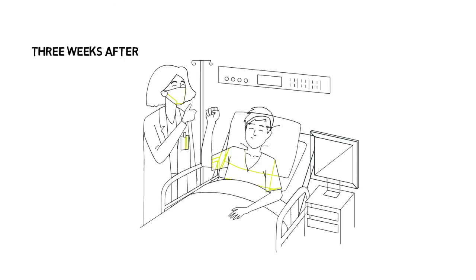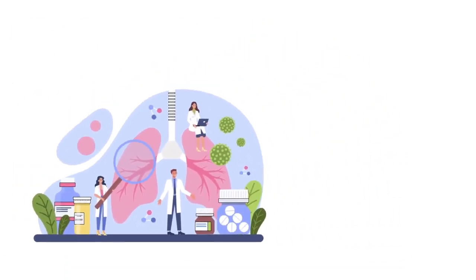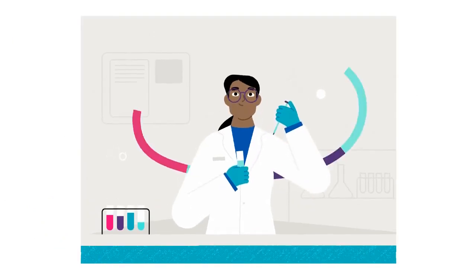Three weeks after the first illnesses emerged, doctors at Wuhan Central Hospital took a sample from a patient's lungs. They sent it to Vision Medicals. Within 48 hours, the company had come up with a short genetic sequence of the virus.